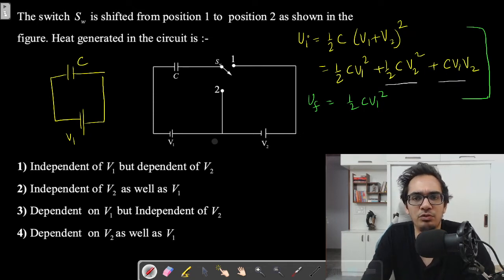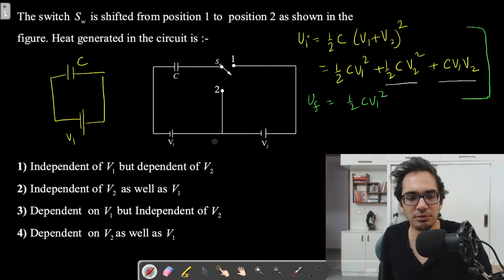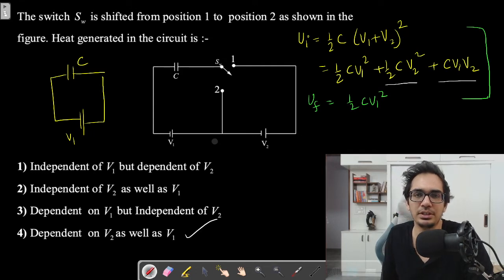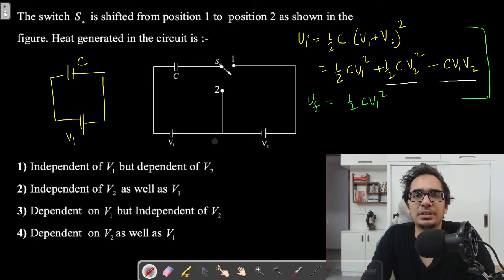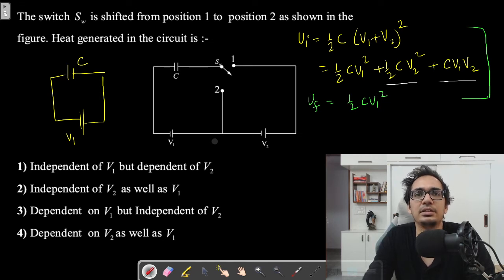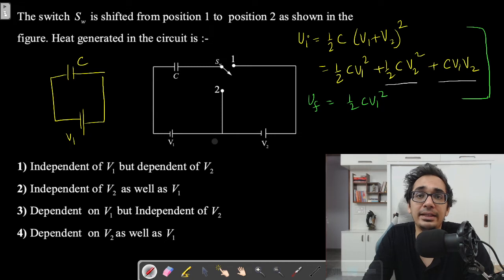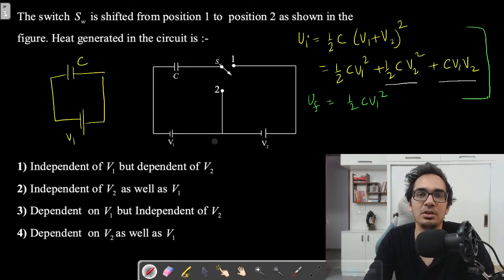You would happily mark the option that it depends on both V1 and V2, but that option is incorrect. Why? Because you forget that the charge on the capacitor also changes. If charge is changing, some charge must have flowed through the battery, meaning the battery also does work. Now you understand the mistake students generally make in this question.